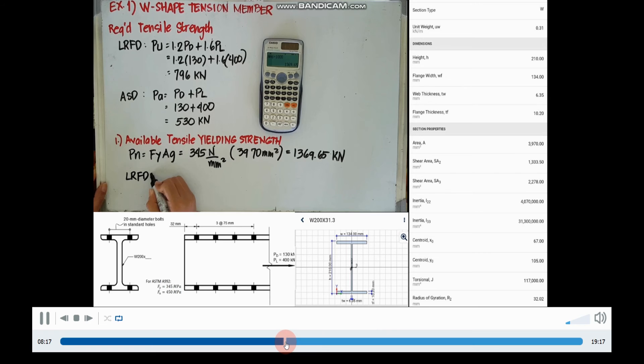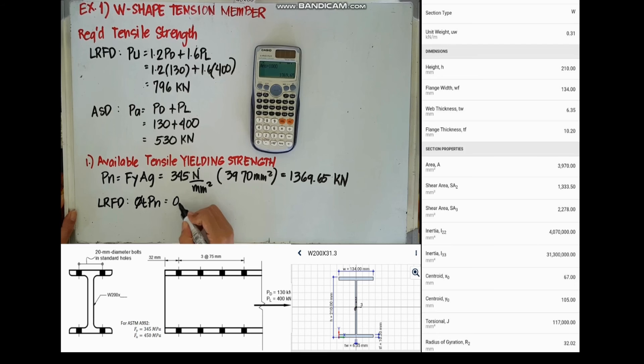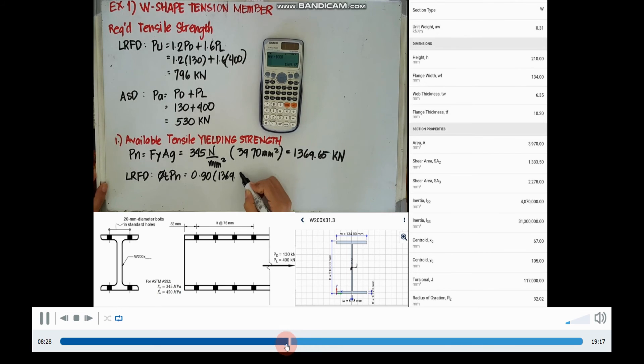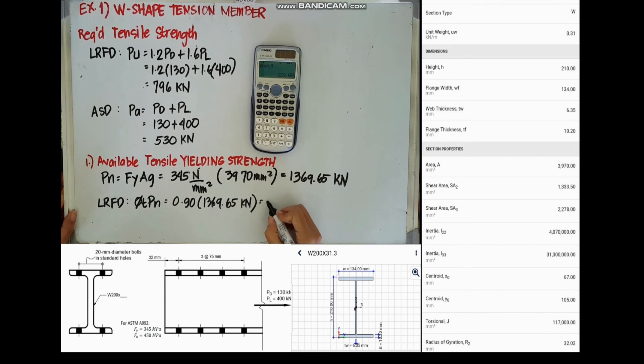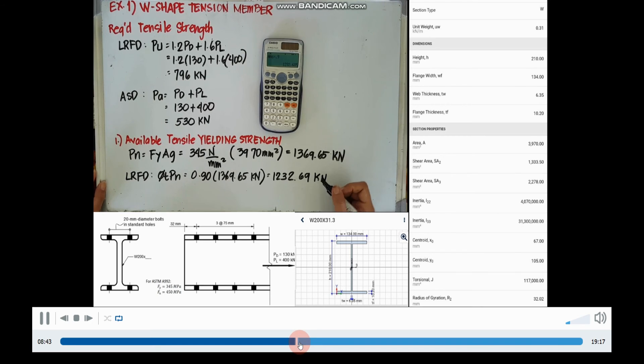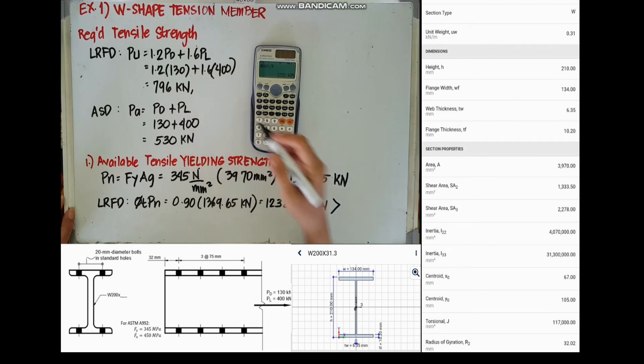So for LRFD, we will just multiply Pn by the resistance factor 0.9, and it will be equal to 1232.69 kN. Comparing it with our required tensile strength 796 kN, it is much greater, so it's okay.